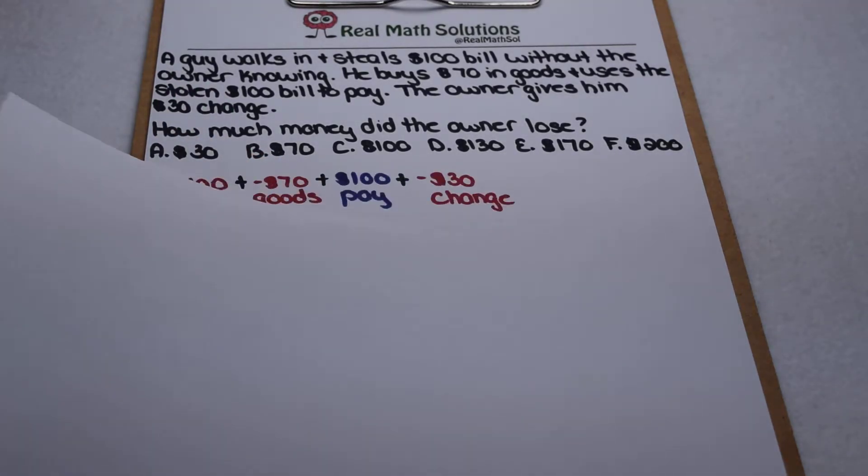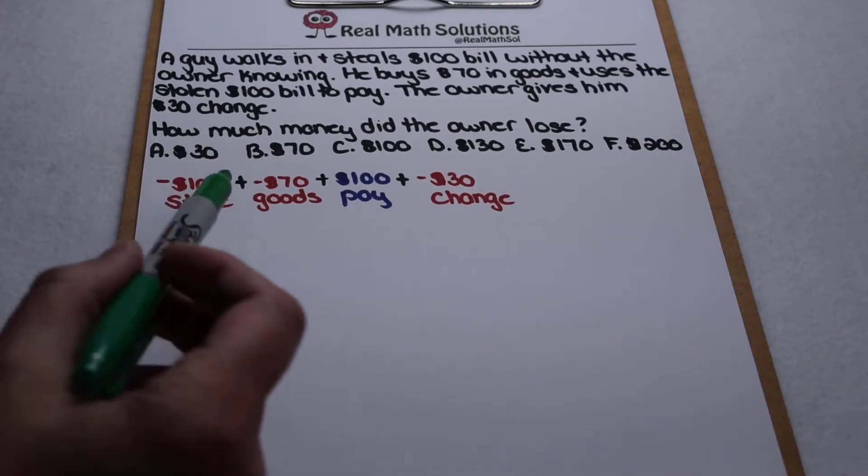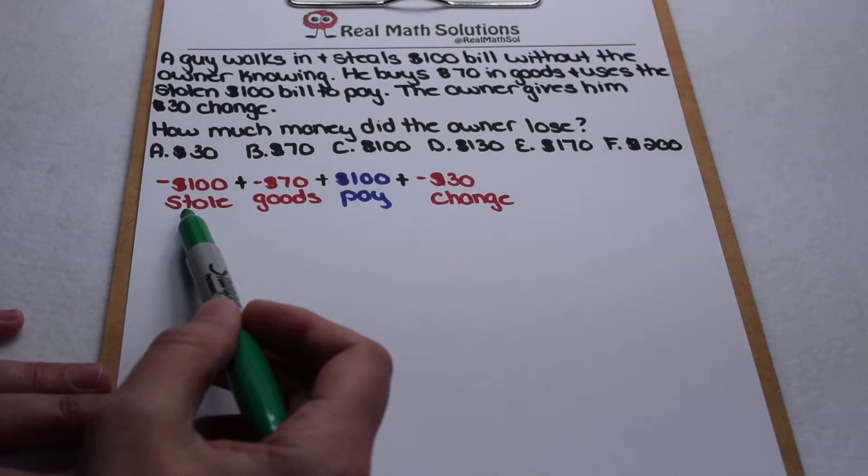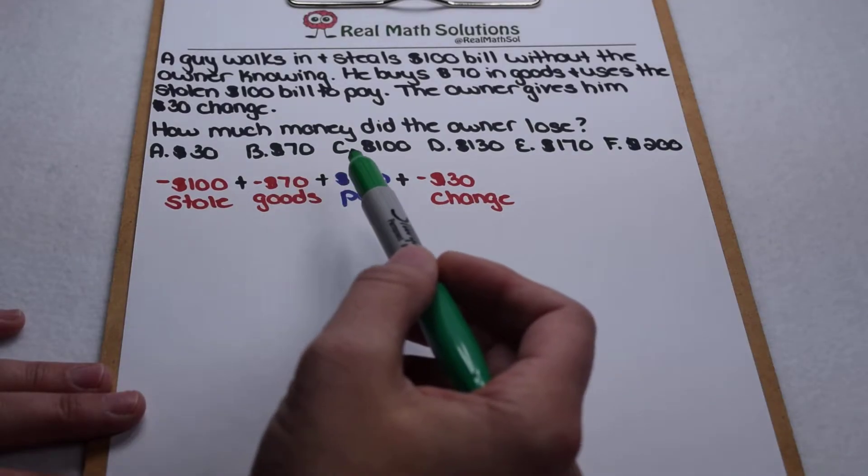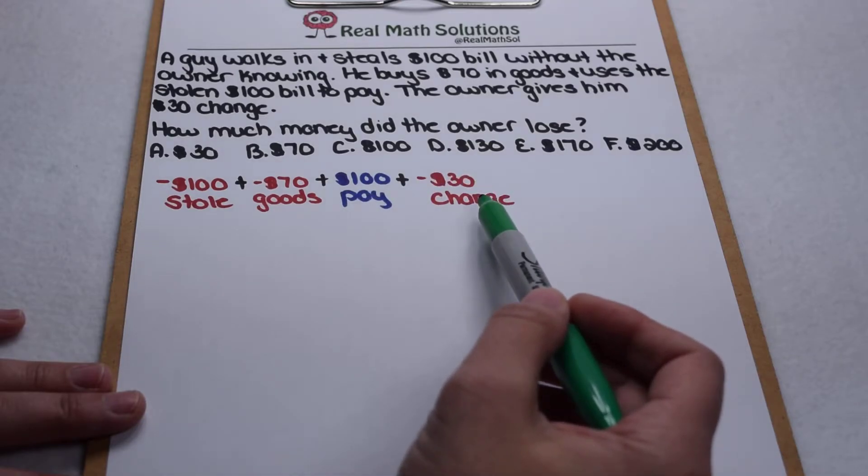Well here we put it out, took the problem and put it in words. We lost $100 from the bill that he stole, $70 in goods that he then bought, but the $100 bill went back to the owner who then lost another $30 and change.